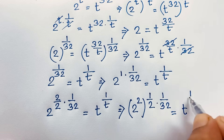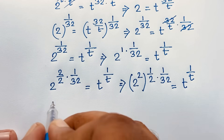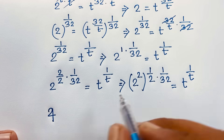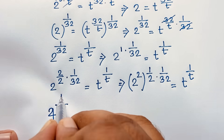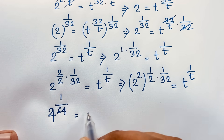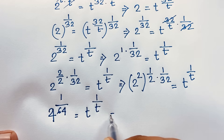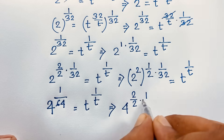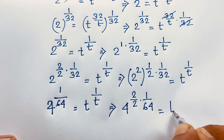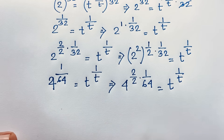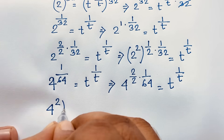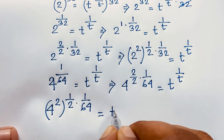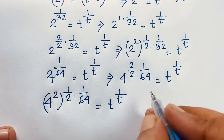Continuing this pattern: 2 to the power 2 equals 4, and the exponent becomes 1 times 1 over 64 — so 4 to the power 1 over 64 is equal to t to the power 1 over t. Then taking 4 as 4 to the power 2, raised to the power 1 over 2, times 1 over 64 equals t to the power 1 over t, I continue solving step by step.